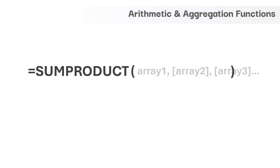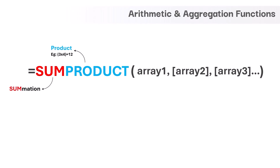This function has only one mandatory argument, but typically we provide input to at least two arguments. The name of this function has two elements. First is 'product', which stands for multiplication — like multiplying two or more numbers or data sets. The second is 'sum', which stands for summation. So basically, SUMPRODUCT is used to multiply values between two data sets and then find the summation of each multiplied value.